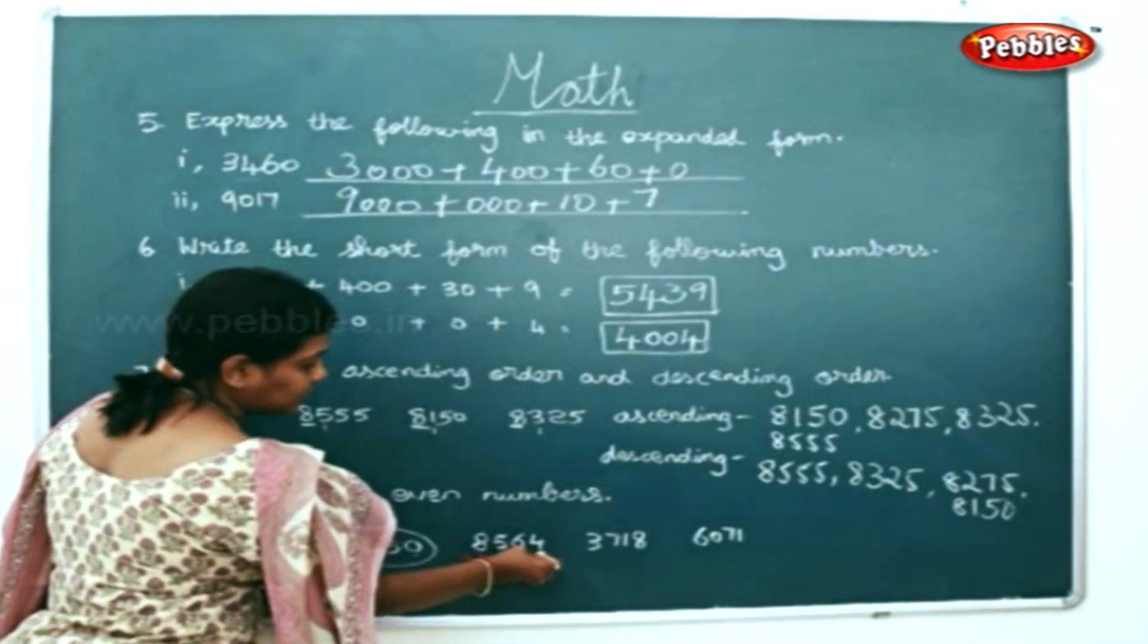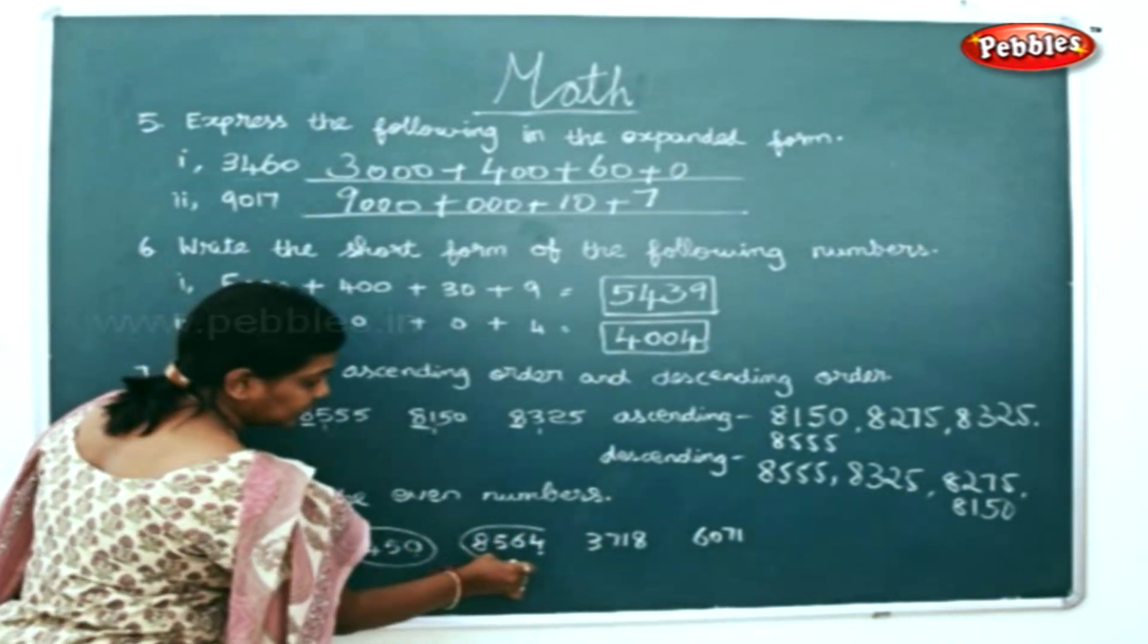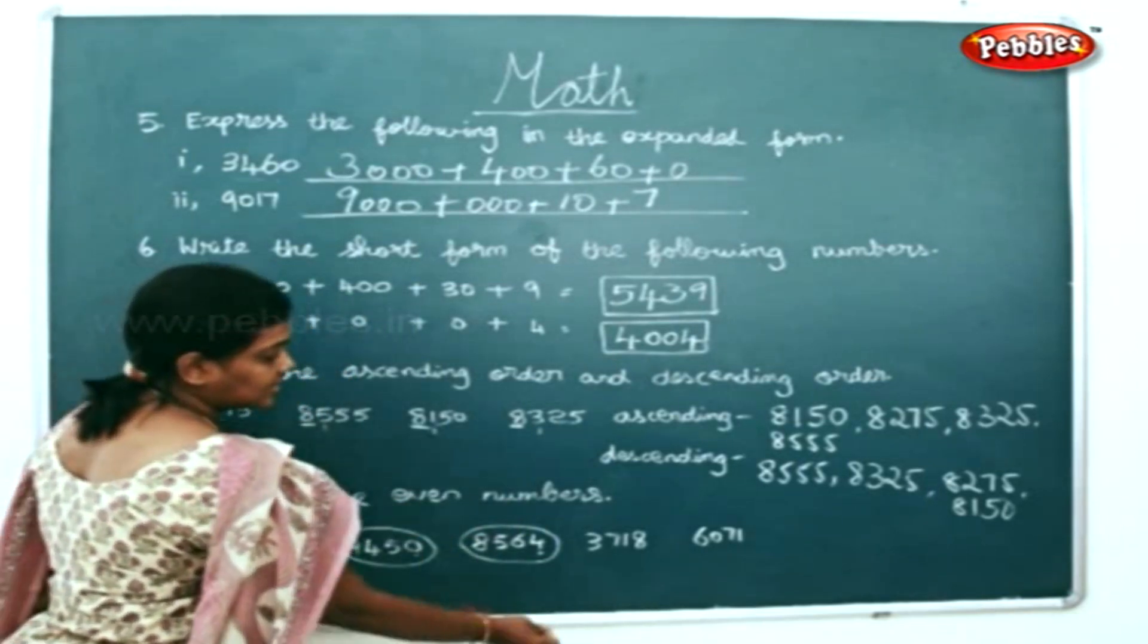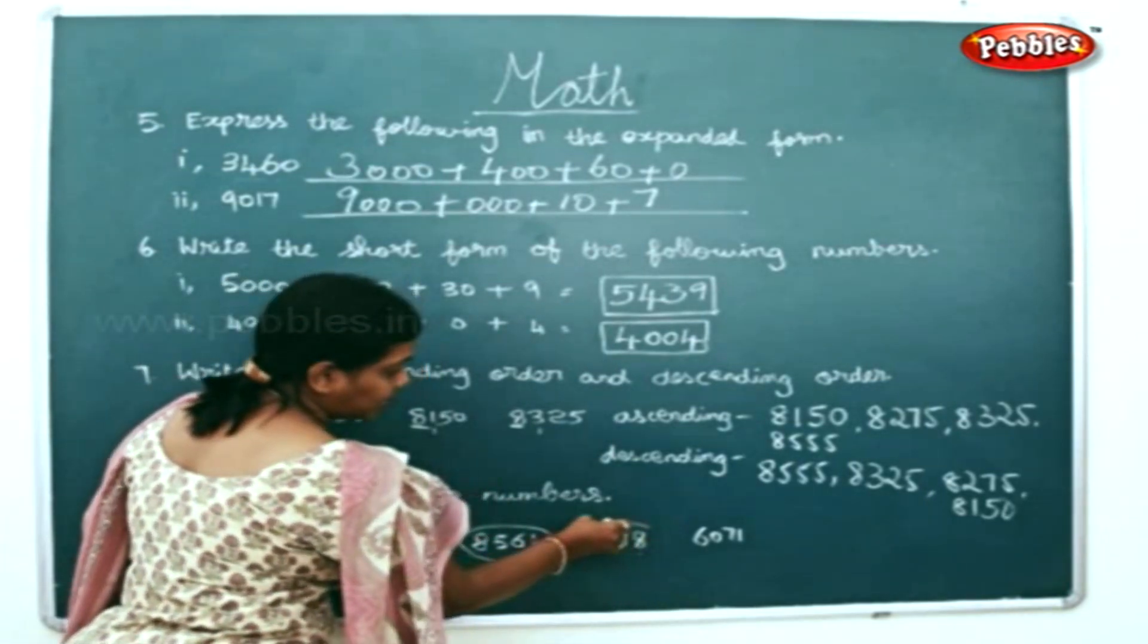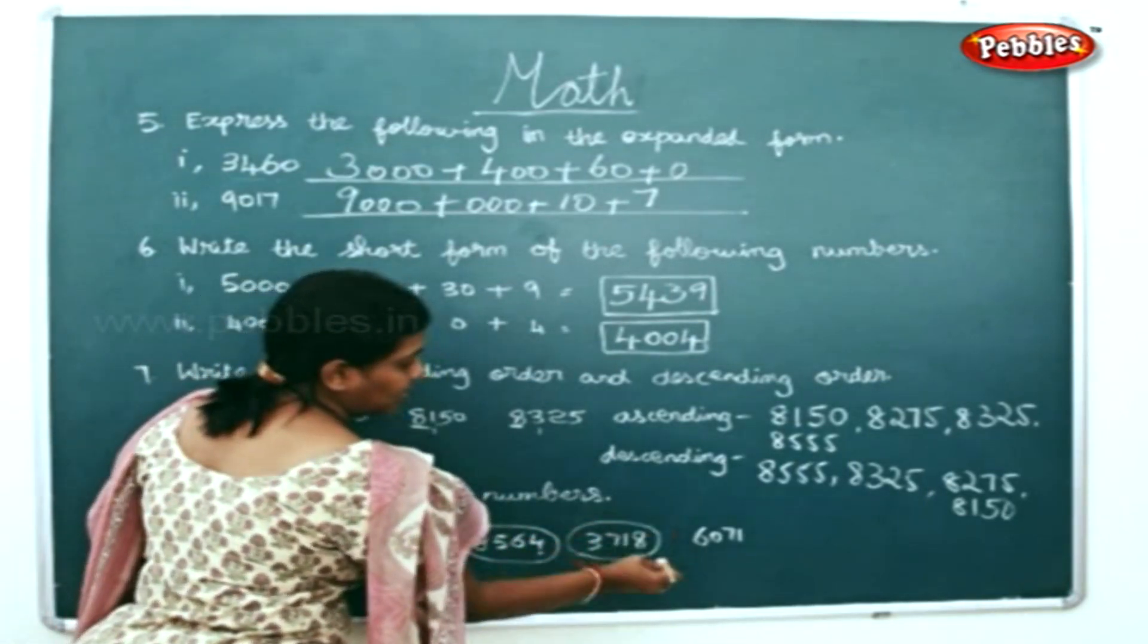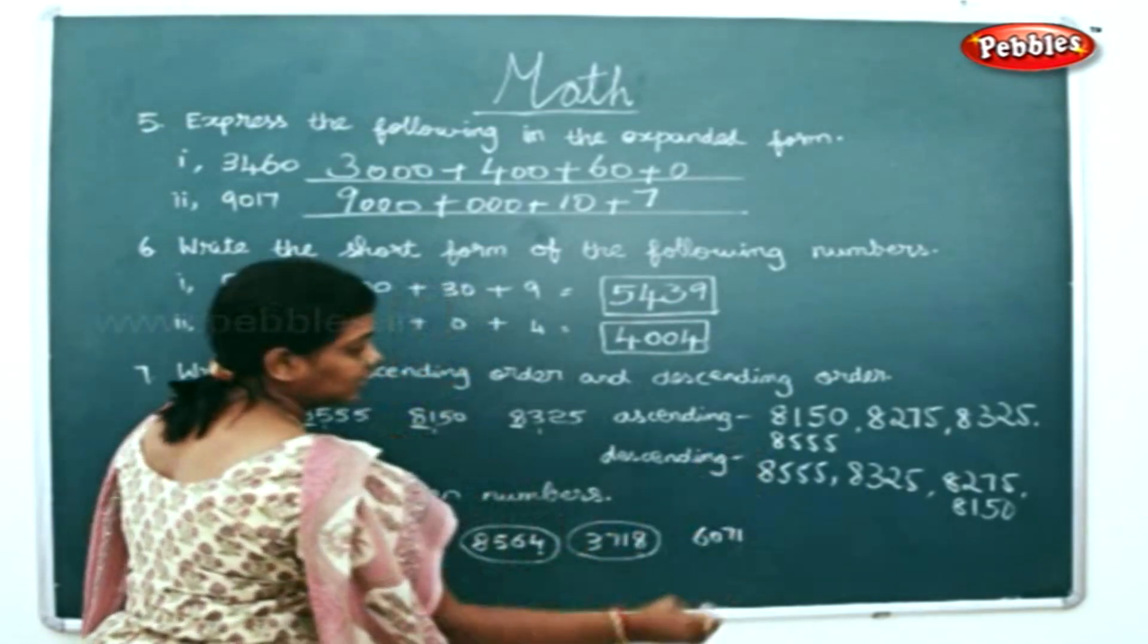4 is an even number, I am circling this. 8 is an even number, I am circling this. 1 is an odd number, I am leaving it off.